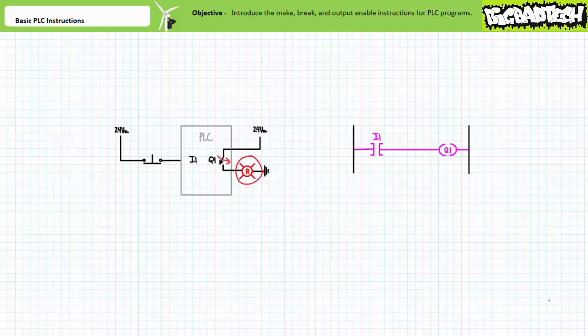Most students don't have issues with the make instruction since it follows a predictable pattern that closely mimics electrical continuity in traditional hardwire relay-based ladder logic. The break instruction, however, is where folks get lost. Be warned, things are about to get weird. The break instruction, like the make instruction, does not take into account the electromechanical nature of the field input device, but rather only bases its decision off the logical value at the input. The break instruction is essentially the opposite of the make instruction in that it allows logical continuity when an input experiences a logical zero, whereas it disallows logical continuity when an input experiences a logical one.